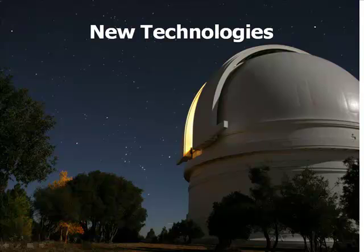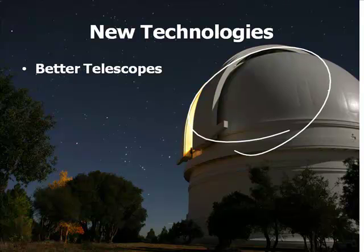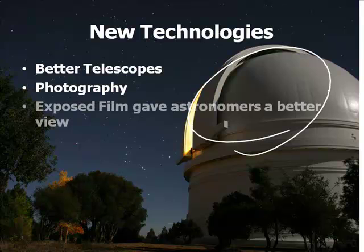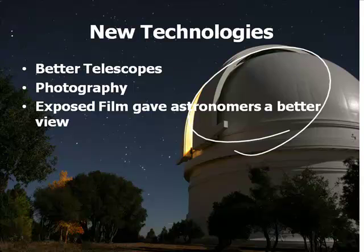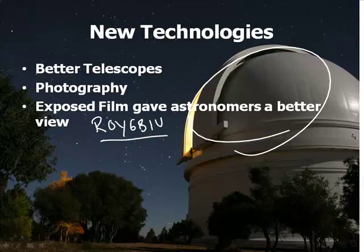Other things that became big in the world of astronomy are new technologies. During this modern era, we discovered better telescopes. Photography allowed astronomers to take pictures and have actual records of what was seen. Exposed film gave astronomers a better view — if you leave photographic film out for a long period of time, it captures more light. They were able to do amazing things with exposed film. We also were able to use different types of light. You think of light as what you can see — Roy G. Biv: red, orange, yellow, green, blue, indigo, violet — but you can also measure things in the X-ray spectrum, infrared, ultraviolet, and more.